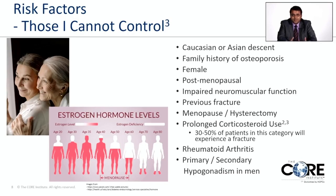Uncontrollable risk factors include Caucasian and Asian ethnicity, family history of osteoporosis, female sex, postmenopausal status, impaired neuromuscular function, history of a previous fracture, menopause or hysterectomy, prolonged steroid use, rheumatoid arthritis, and primary or secondary hypogonadism in men. Hypogonadism affects hormonal balance, which impacts bone health.